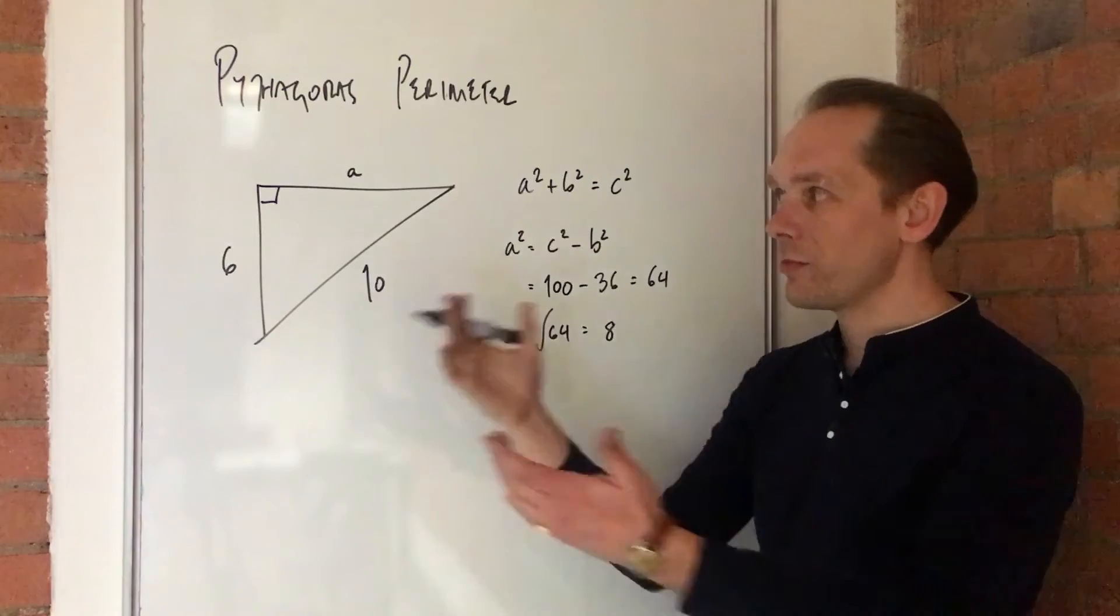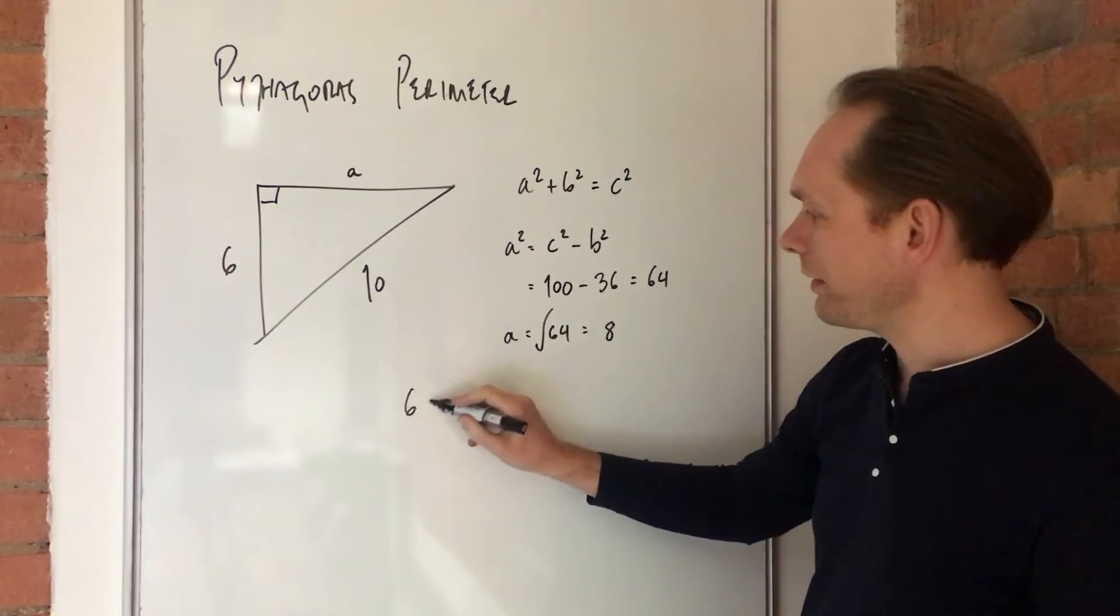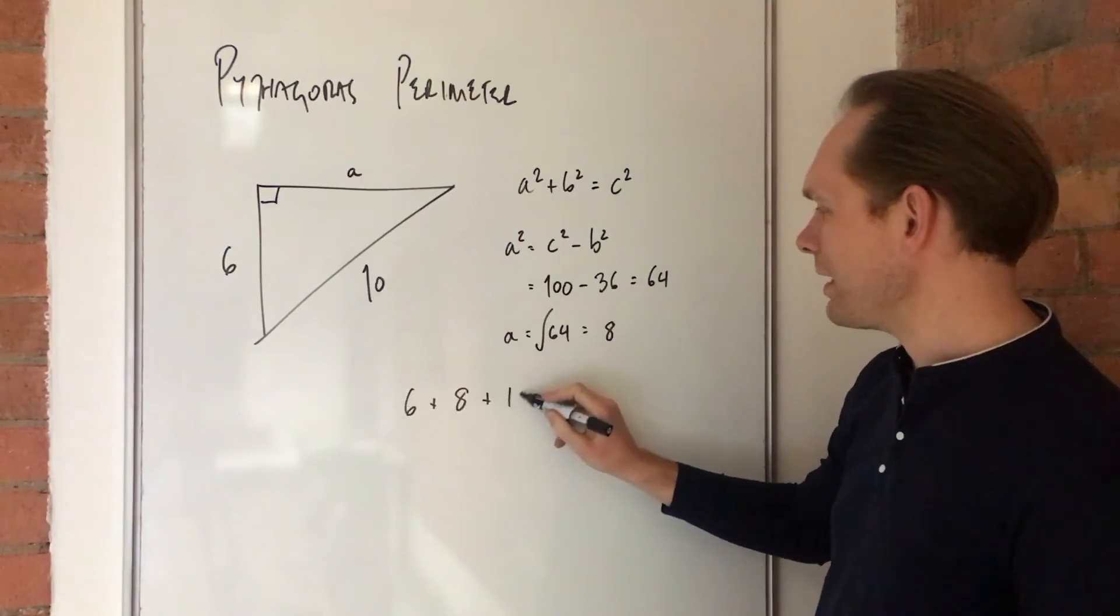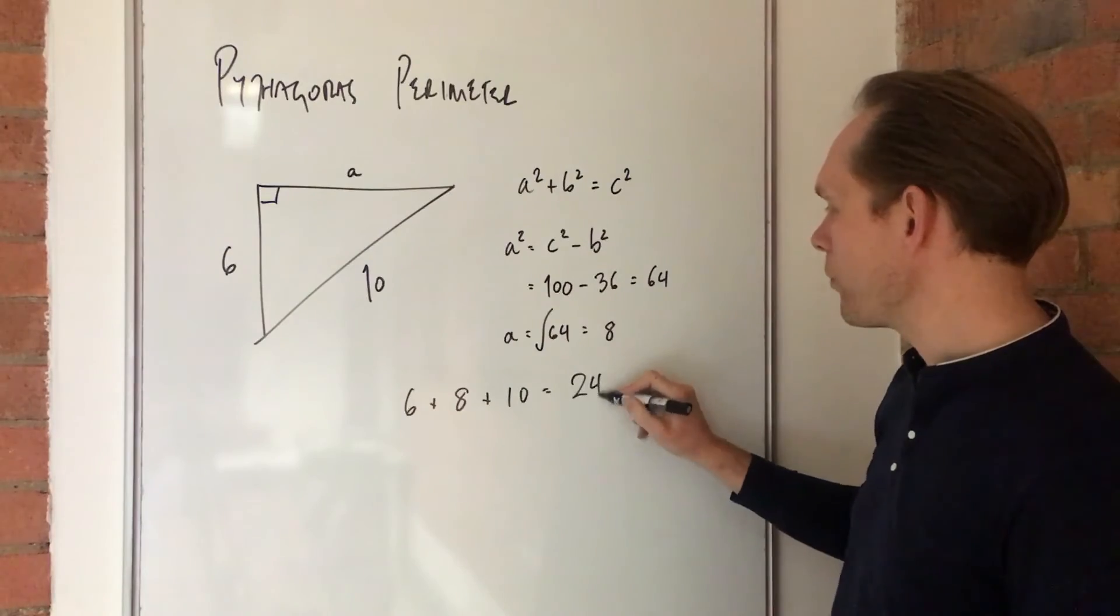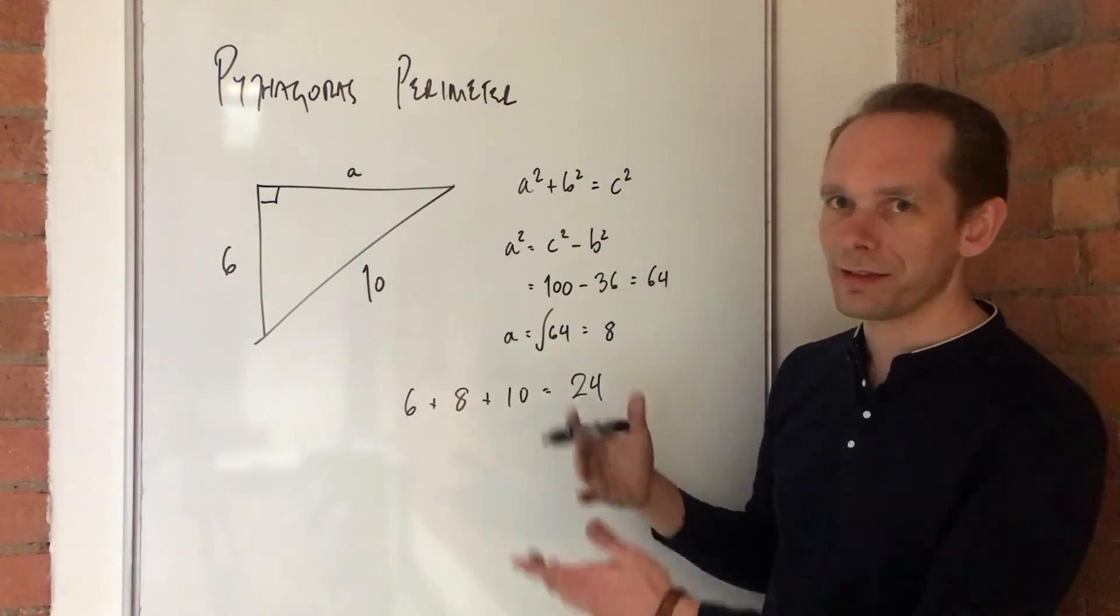Finally, we can work out the perimeter. It's going to be 6 plus 8 plus 10, which hopefully is 24 units. I haven't put units on. Let's say it's centimeters.